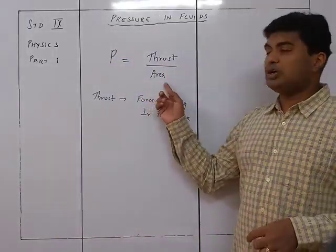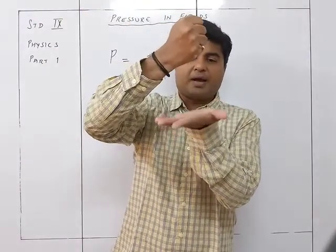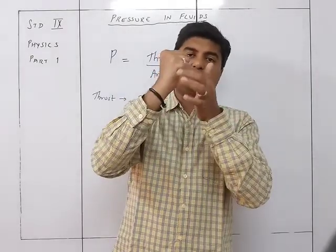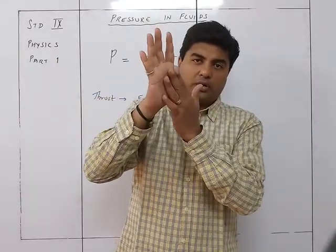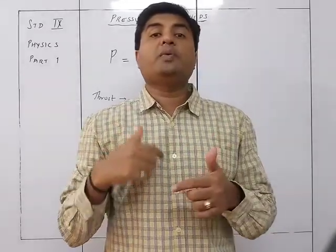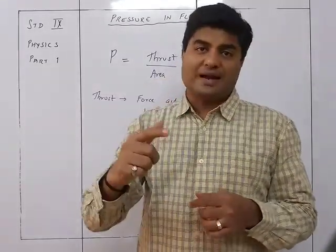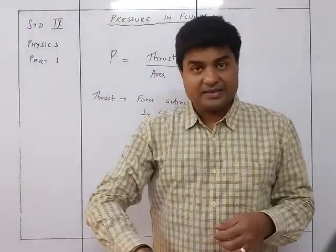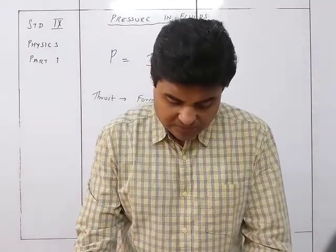Pressure is inversely proportional to the area of contact. If I place my hand flat, the contact area is large so pressure is less. If I tilt it so the contact area is smaller, the pressure increases. More the area, lesser the pressure; lesser the area, more the pressure.